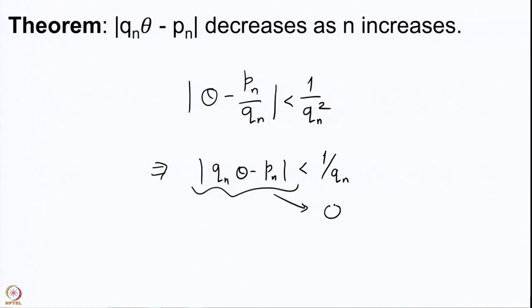This difference goes to 0 as Qₙ goes to infinity. This was Lemma 4 in our proof of existence of a continued fraction expansion for a given real number. We know this goes to 0, but what we want to prove is that this sequence which goes to 0 is actually a decreasing sequence — that the value for n+1 is smaller than the value for n.